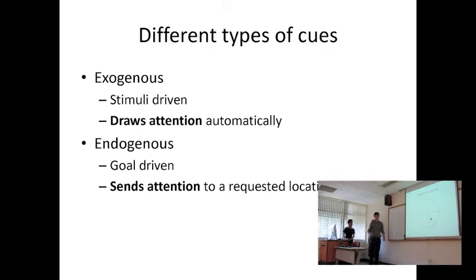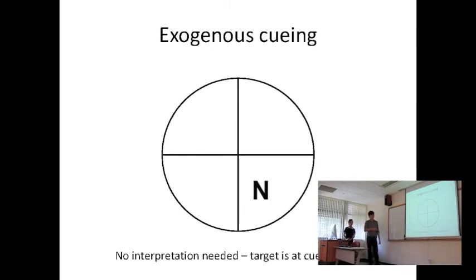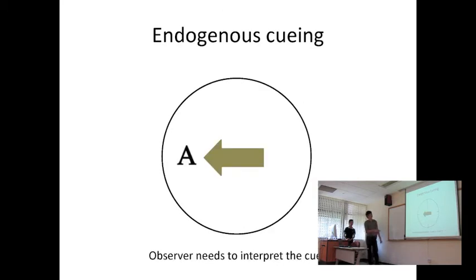So this is an example of an exogenous cue, this dot over here. It doesn't require any interpretation as the target is at the cue location itself. This is an example of an endogenous cue, this arrow over here. Any observer would be required to interpret the cue in order to determine the target location, which is the position at which the arrow is pointing at.